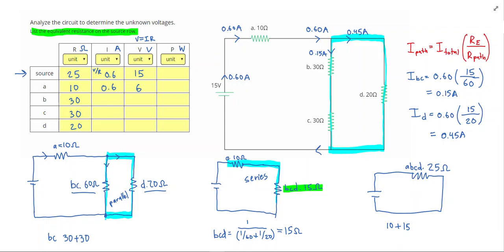Coming back to my chart on the left hand side, I can fill out that 0.15 amps went through B, and also is going to travel into C. And then 0.45 amps will travel into D.